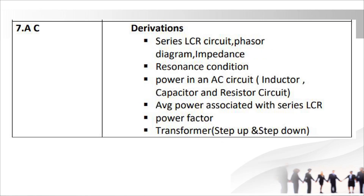Chapter 7: AC (Alternating Current). Derivations: series LCR circuit — phasor diagram, impedance, resonance condition, power in an AC circuit with inductor, capacitor, and resistor circuit, average power associated with series LCR, power factor, and transformer — step up and step down.